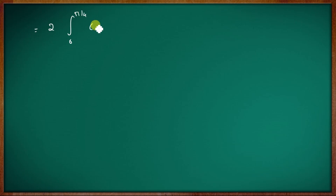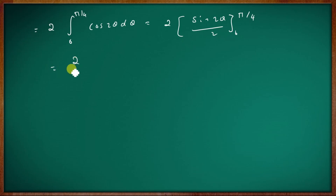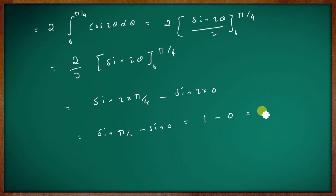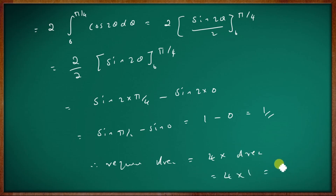So the area equals 4 · 2 · ∫₀^(π/4) cos2θ dθ. Integrating: [sin2θ/2] from 0 to π/4. The 2s cancel, giving [sin2θ] from 0 to π/4. Applying limits: sin(2·π/4) - sin(0) = sin(π/2) - 0 = 1 - 0 = 1. Therefore the required area equals 4 × 1 = 4.